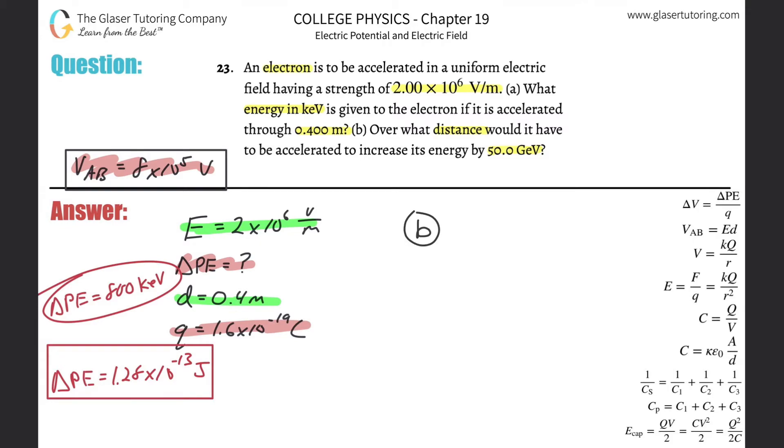So it says now over what distance would it have to be accelerated to increase now its energy by 50 giga electron volts. So first thing, what the heck is that even in terms of just joules, right? 50 giga electron volts.